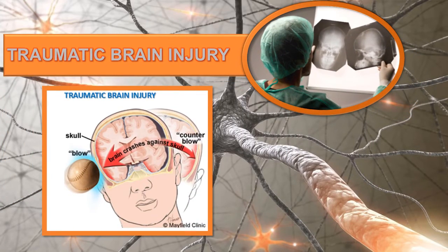A traumatic brain injury occurs when there's a blow or jolt to the head, as a result of a penetrating object, bullet, or foreign material. If there's a blow, there's usually a counter-blow, as illustrated in the picture, causing several symptoms. The most common responses are hypertension, hypoxia, ischemia, and edema. Increased intracranial pressure is the leading cause of death in patients with a brain injury.